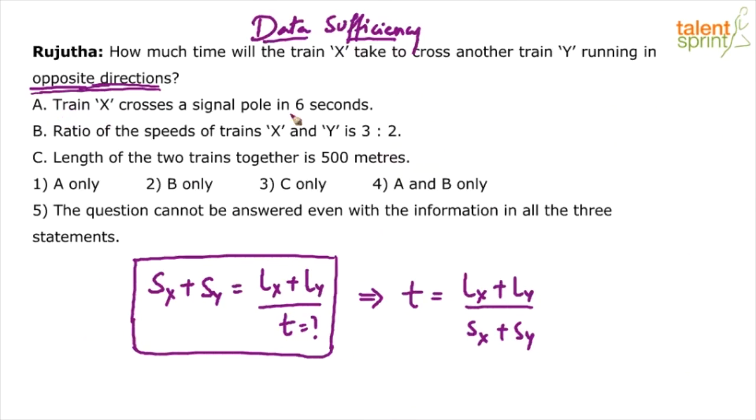Look at statement A. Train X crosses the signal pole in six seconds. What does it mean train X crosses the signal pole in six seconds? The equation would be speed of X equals length of X by 6. We have discussed why this would happen. When you're crossing a pole, you have to travel your own length. So speed of train X will equal length of train X by 6. Will this be enough to answer the question? No.